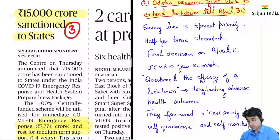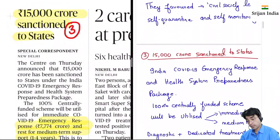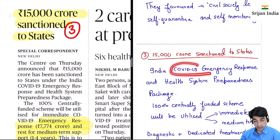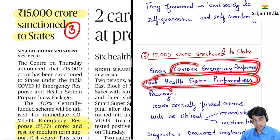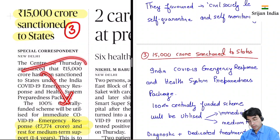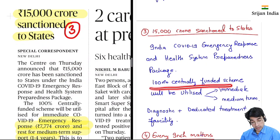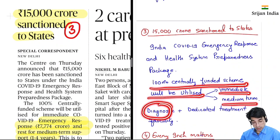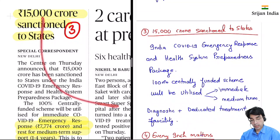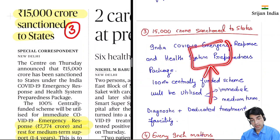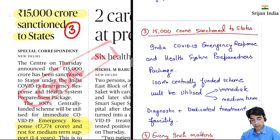15,000 crore sanctioned to states for the COVID-19 emergency response and health system preparedness package. Center aur states ke beech fiscal federalism hai — finance commission, article 280 and all. States ko itna paisa allocate kar raha hai — hundred percent centrally funded scheme will be utilized. Immediate relief bhi hoga aur ek medium term bhi hoga. Diagnostic matlab jaanch pata karana, aur then dedicated treatment — jo jaanch jiski ho gayi hai usko phir ilaj dena. Toh yeh pura fund COVID-19 ko combat karne mein utilize hoga.